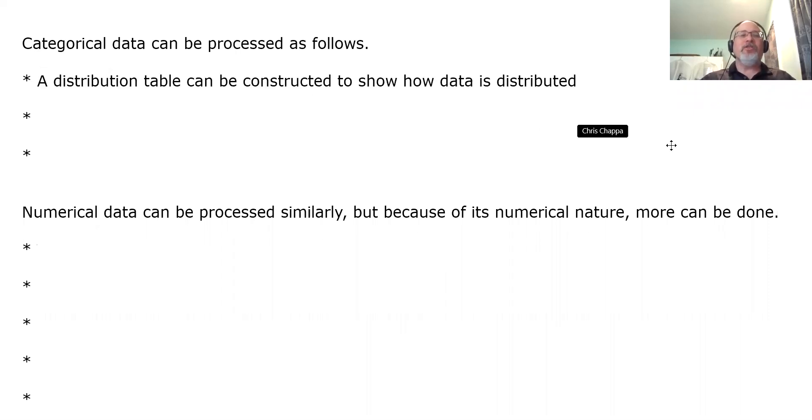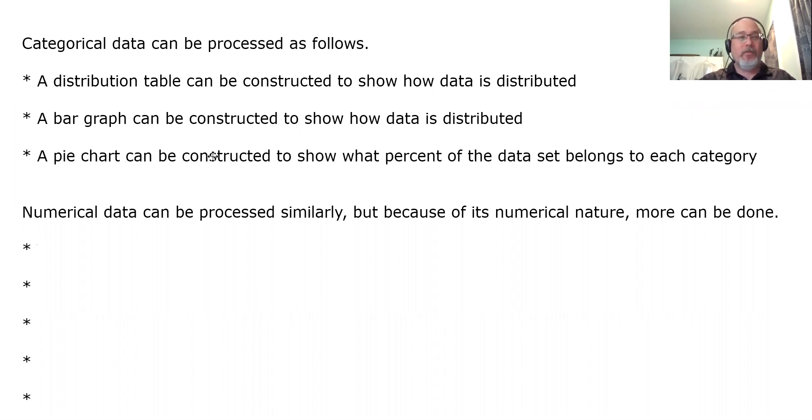A distribution table can be constructed to show how the data is distributed. We are going to be doing this very soon, in fact in this section. A bar graph can be constructed to show how data is distributed. We will be doing this, but it will be in the second section of this chapter. A pie chart can be constructed to show what percent of the data belongs to each category. You've probably seen a pie chart before. That is something we're going to be looking at in the next section.